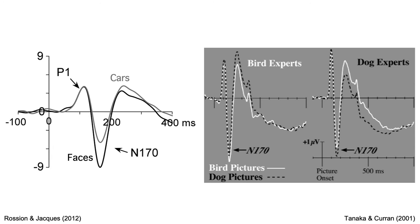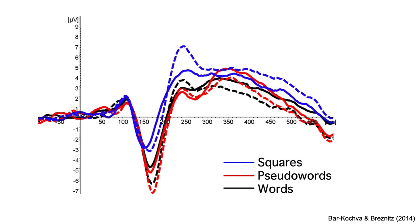As discussed in another video, the N1 or N170 wave is bigger for faces than for most other classes of stimuli. Experience also plays a role — for example, words elicit a large N1 in experienced readers. After decades of ERP research, I bet I have a huge N1 when I look at ERP waveforms.